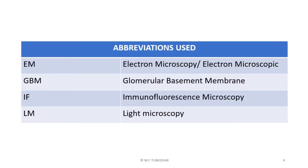A quick look at short forms or abbreviations used in my presentation. Though most of them are well known, I'll quickly recap them. EM stands for electron microscopy or electron microscopic. GBM stands for glomerular basement membrane. IF is immunofluorescence microscopy, and LM is light microscopy.